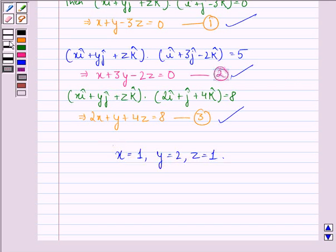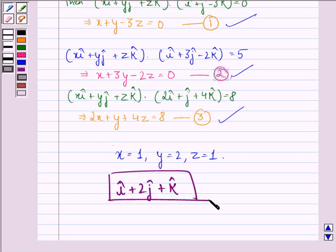Hence, the required vector is i cap plus 2j cap plus k cap. This is also our answer to this question. I hope that you understood the solution and enjoyed the session. Have a good day.